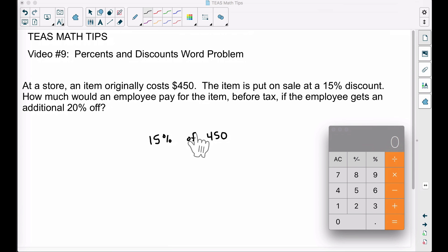A quick way to find a percentage of a number is to take the percent—0.15, that's 15%—multiply it by 450. So the discount that we would get, you and I, if we're not employees, we would get a $67.50 discount.